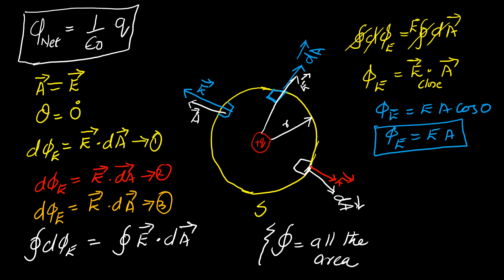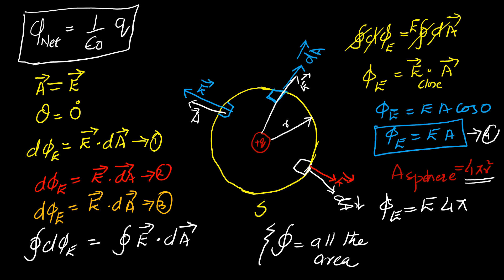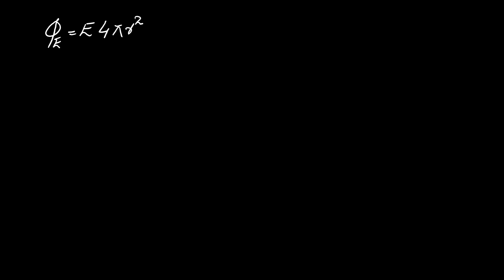As you know, the area of a sphere is equal to 4·pi·r². This is equation number 4. We incorporate the value of the area of the sphere, so the total flux becomes: phi_E = E × 4·pi·r², where r is the radius of the sphere. This is equation number 5.